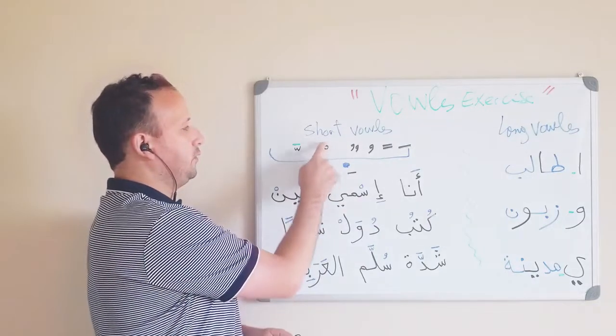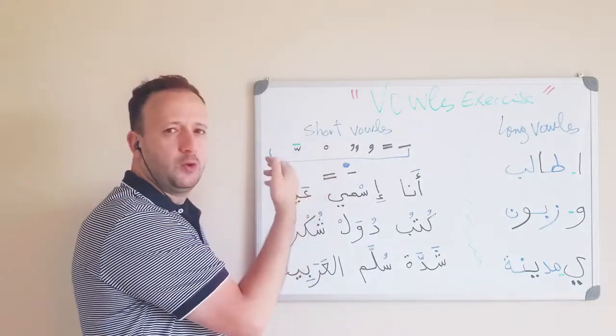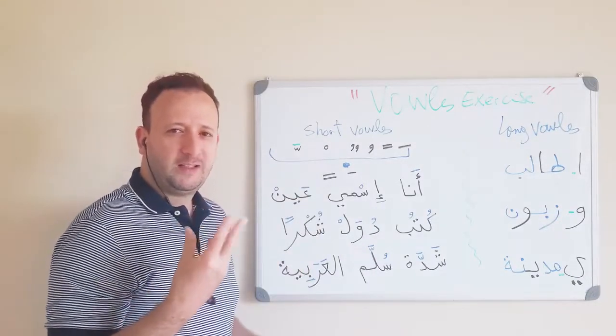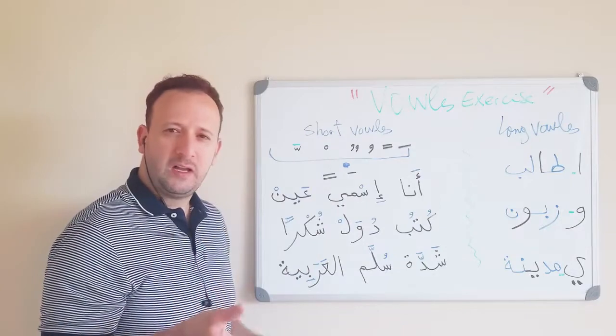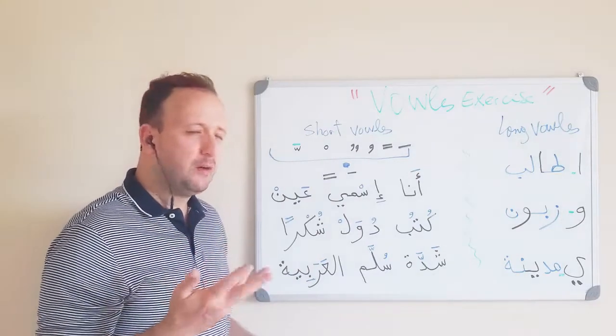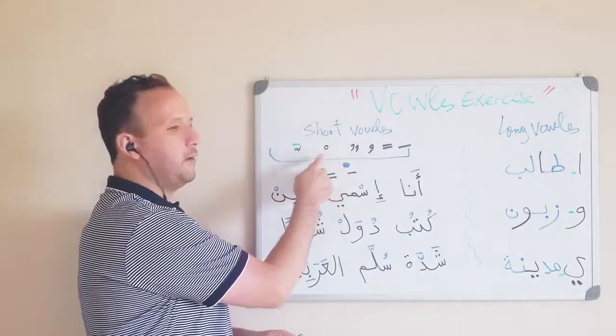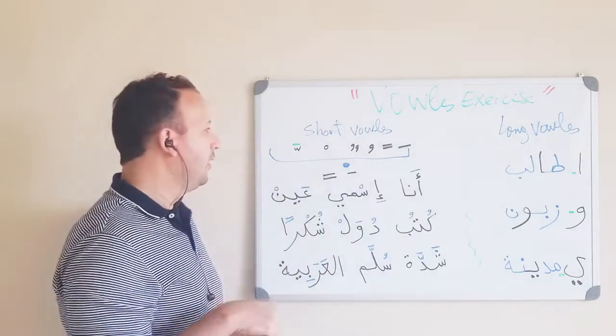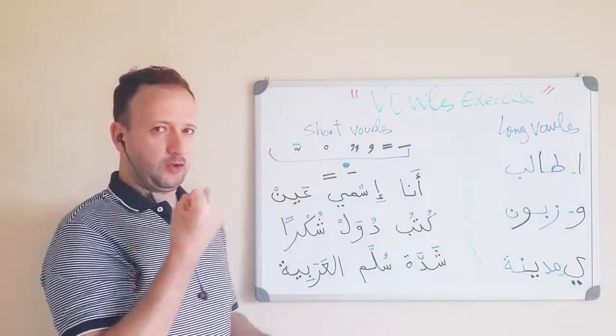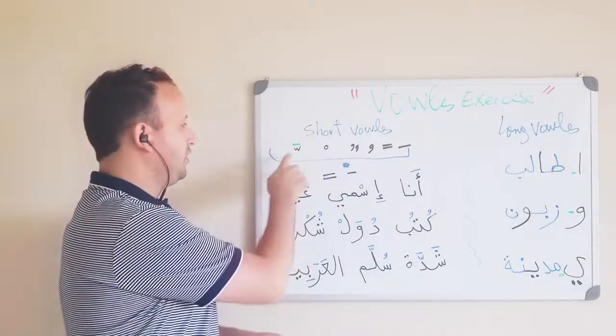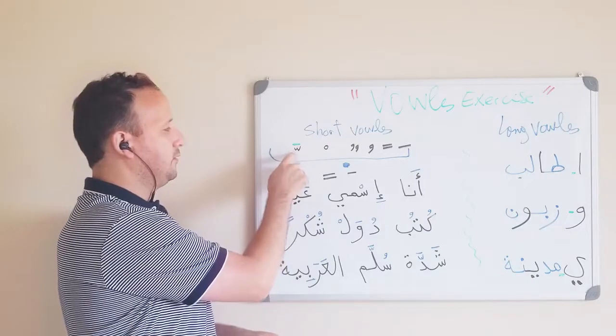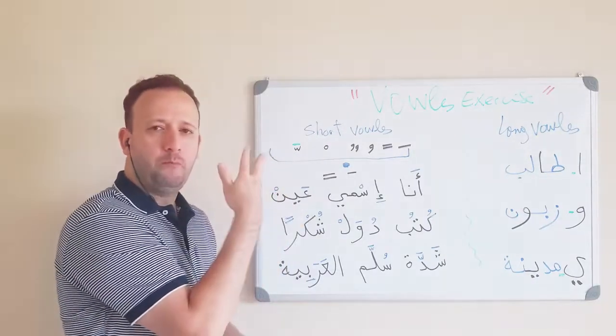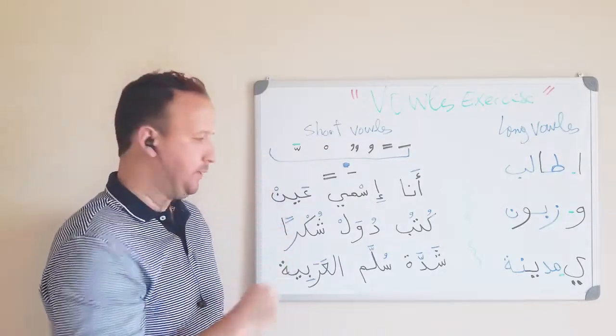And here you have sukun. This sort of circle is called sukun. It actually came from sakina, which is like quietness. It's not loud. So it's going to make this letter b. And this one is the opposite, it's going to make it stronger. It's shadda. It's called shadda. So it's usually under the fatha. So it's going to be b.